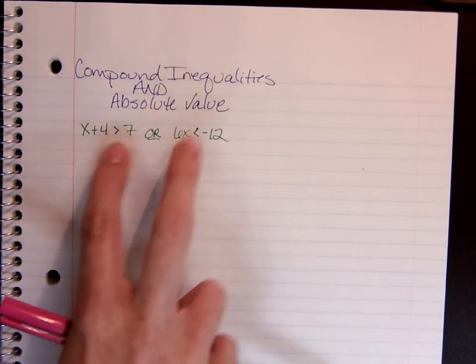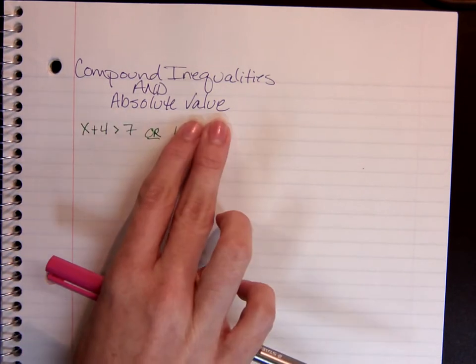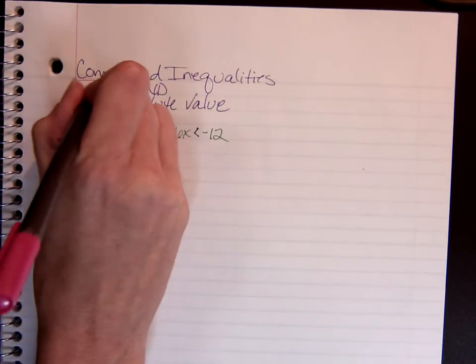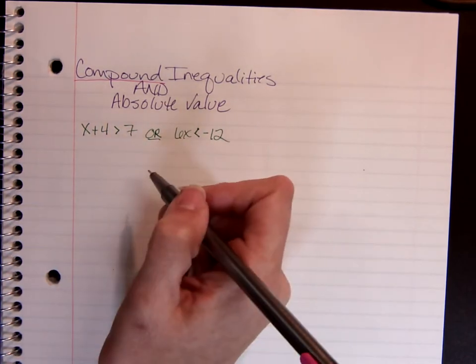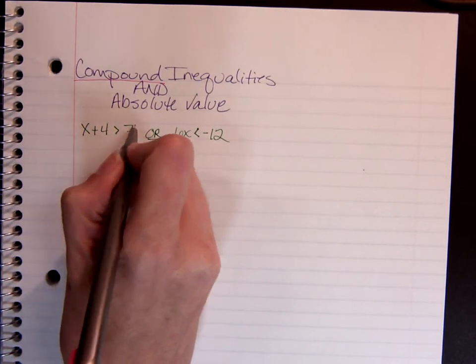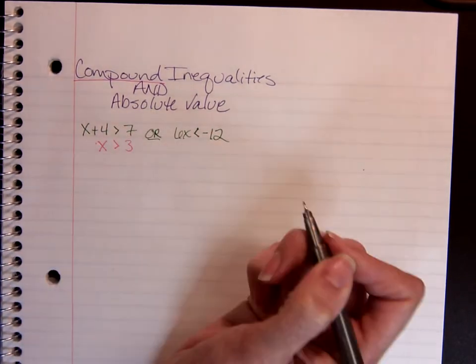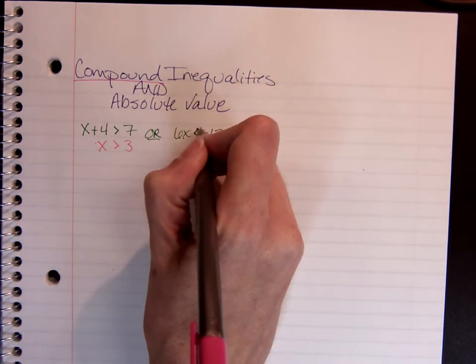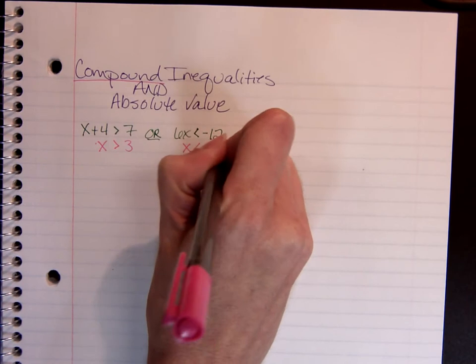You already know how to do these kinds of problems individually, right? We're still going to solve it. Compound just means there's two. So I'm going to do both of them and then put their results on the same number line. If x plus 4 is greater than 7, then I know that x has to be greater than 3. And 6x is less than negative 12, so I know x has to be less than negative 2.